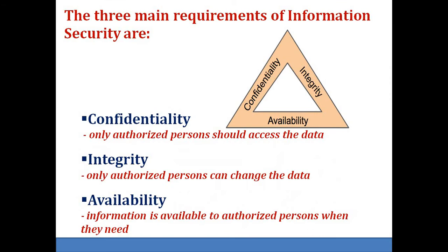The three main requirements of information security are confidentiality, integrity, and availability. Confidentiality means only authorized persons should access the data. For example, we have bank data. Confidentiality here means bank officials and customers alone can access the data, not others.